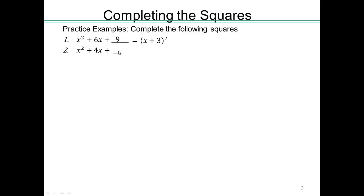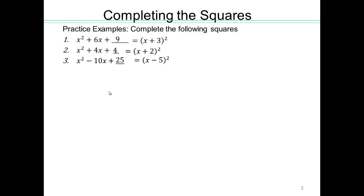To complete the square: take the middle number, chop it in half, and square it. 4 halves is 2, 2 squared is 4, giving (x plus 2) squared. Half of negative 10 is negative 5, negative 5 squared is 25, giving (x minus 5) squared. If there's a plus, you have a plus; if there's a minus, you have a minus. The constant inside is half of the coefficient, and the number added is that half squared.